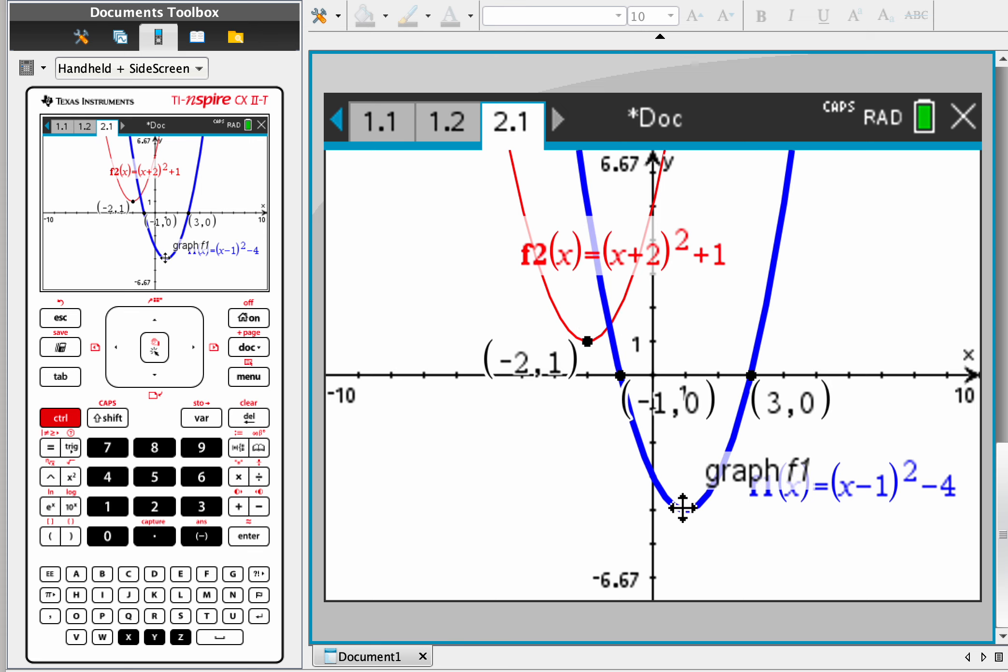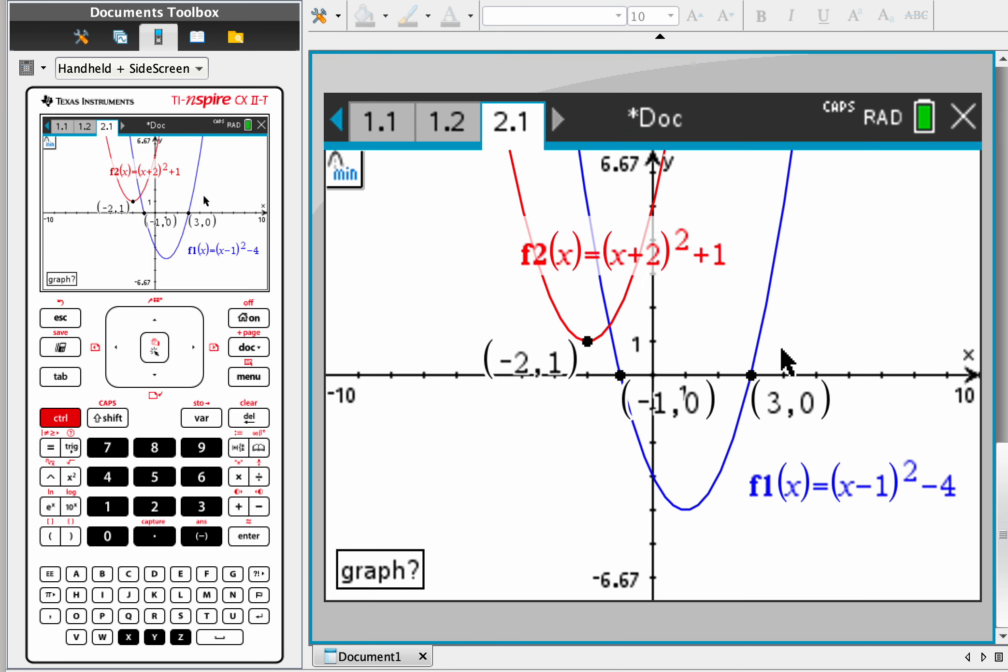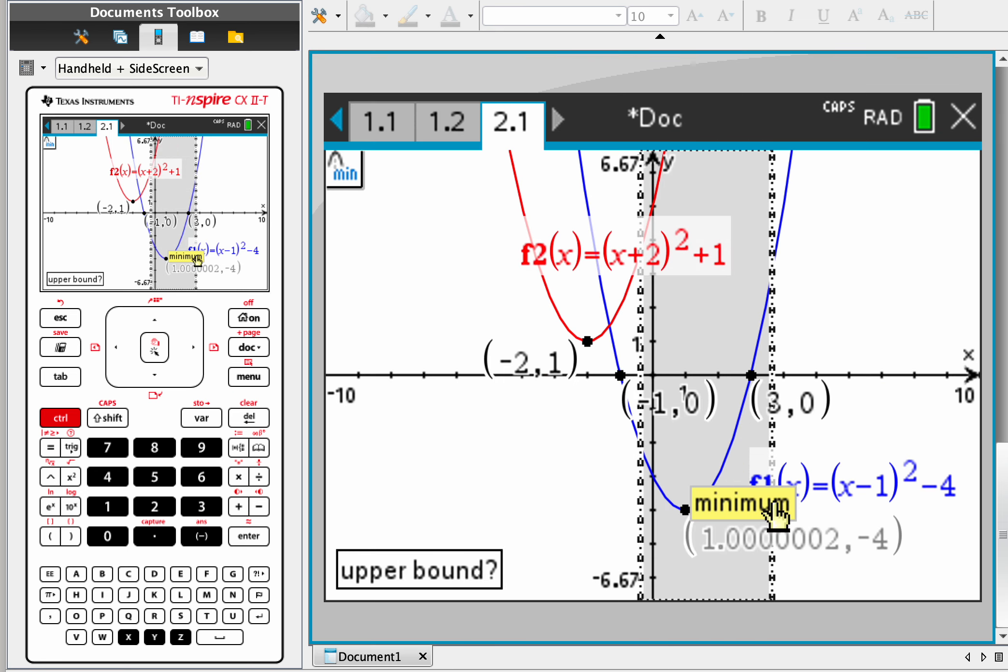And one more time, the minimum of this, same exact process. Analyze graph, minimum, click that, and here to here. And there you can see, same issue, 1.0000. Use your brain if you see that, it's just one. Round it off, but you can keep moving it until it works nicely.